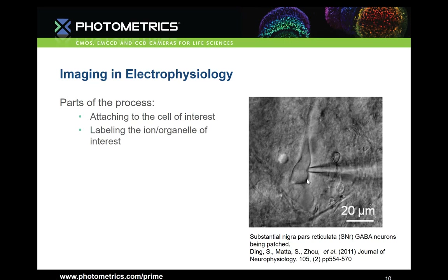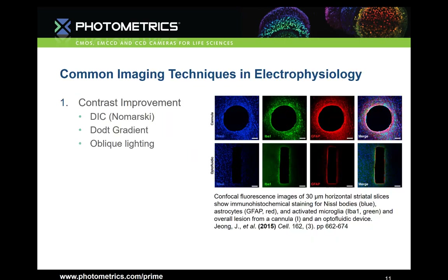Next, targeting the specific cell type is required to obtain relevant data. To do this, fluorescence microscopy is often used to target specific cell types. DIC, dot gradient, and oblique lighting are all used in the electrophysiology laboratory. However, differential interference contrast — or Nomarski contrast — is perhaps the most used.